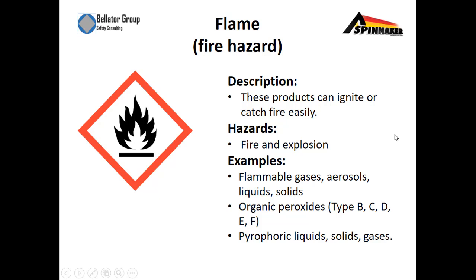The first pictogram is a flame. It represents a fire hazard — this product can ignite or catch fire easily. The hazard is fire and explosions, and examples include flammable gases, aerosols, liquids, or solids. Organic peroxides type B, C, D, E, and F would all be covered under this category.